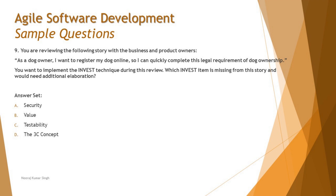First, let's discuss what INVEST is all about. INVEST stands for: I — Independent, N — Negotiable, V — Valuable, E — Estimable, S — Small, and T — Testable. Note that security, value, testability, and the Three C's are different concepts related to user stories, but the key here is identifying what is missing from the INVEST criteria.